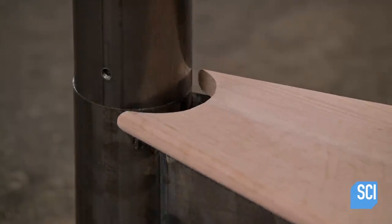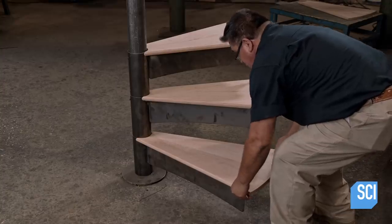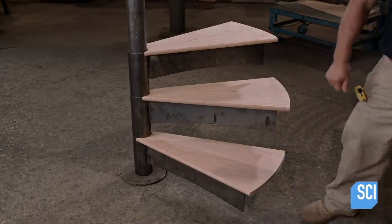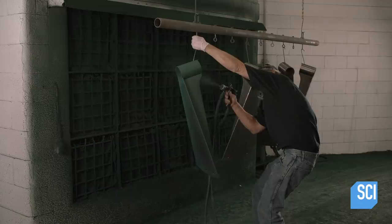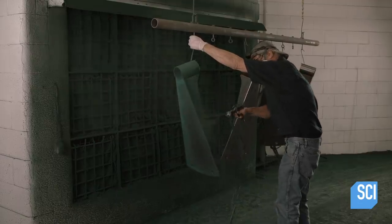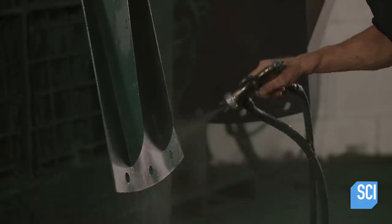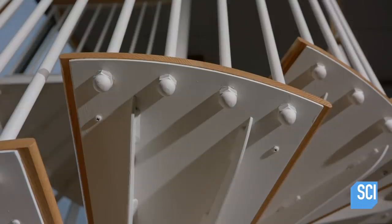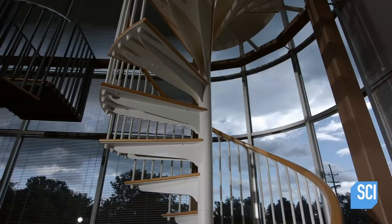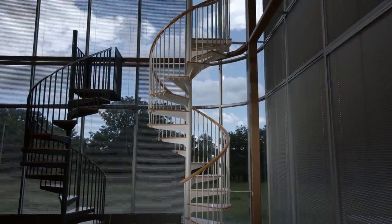A worker pre-fits the wooden treads to the metal structure and then disassembles the entire spiral staircase for painting and staining. The spiral stairs are then ready for reassembly in the building they were designed for. They'll definitely add a certain twist to the interior design.